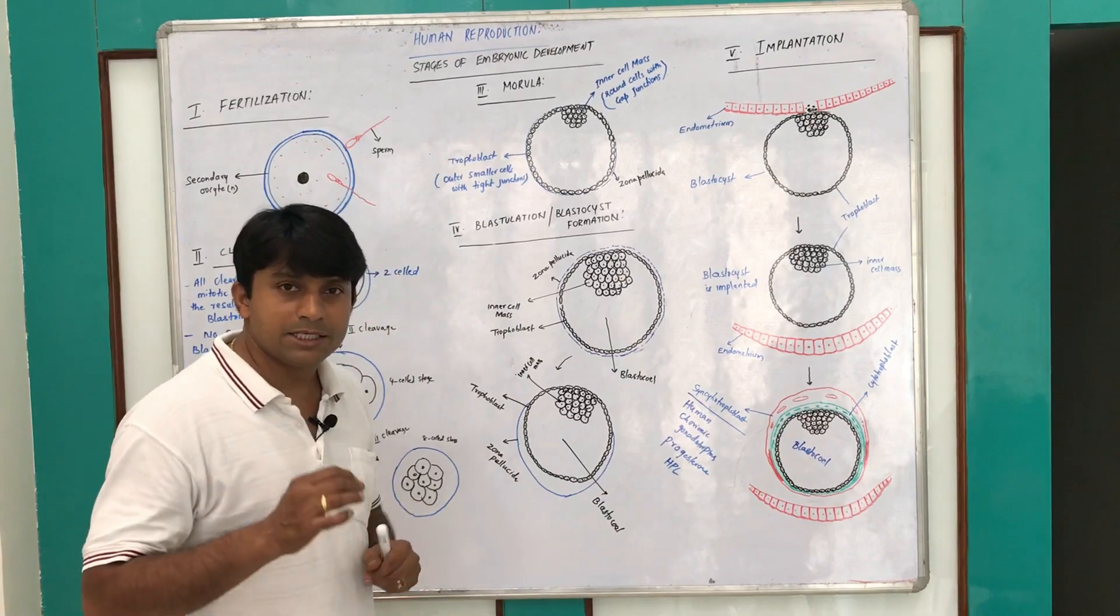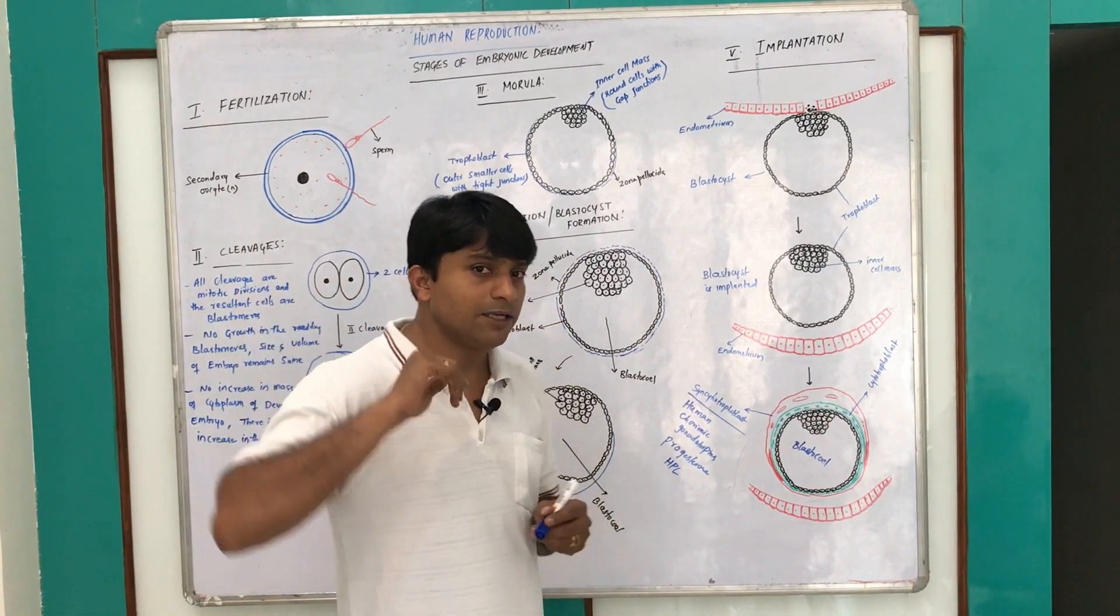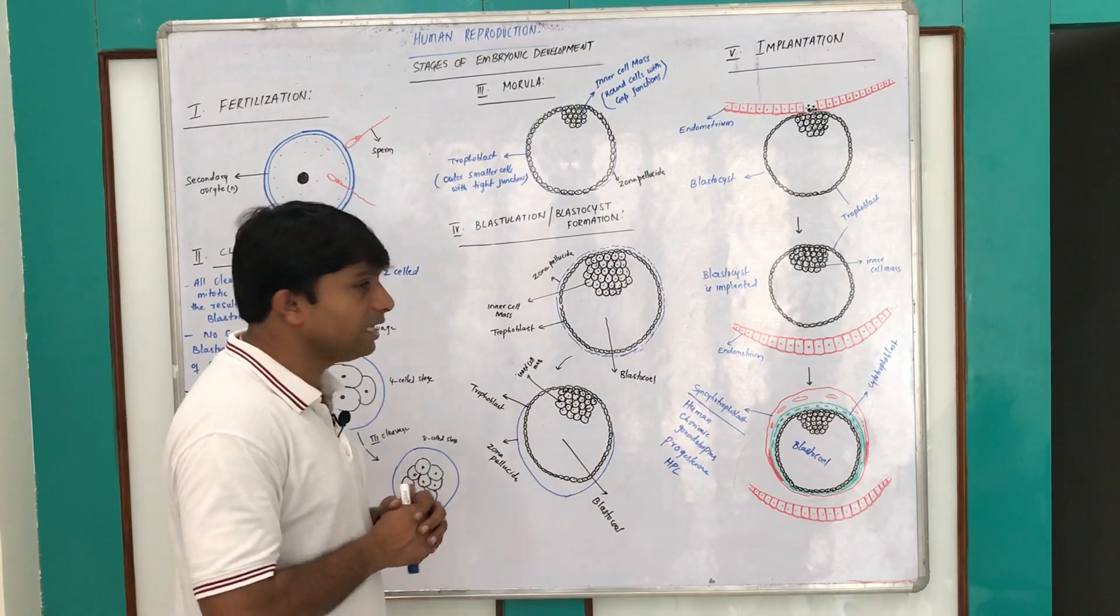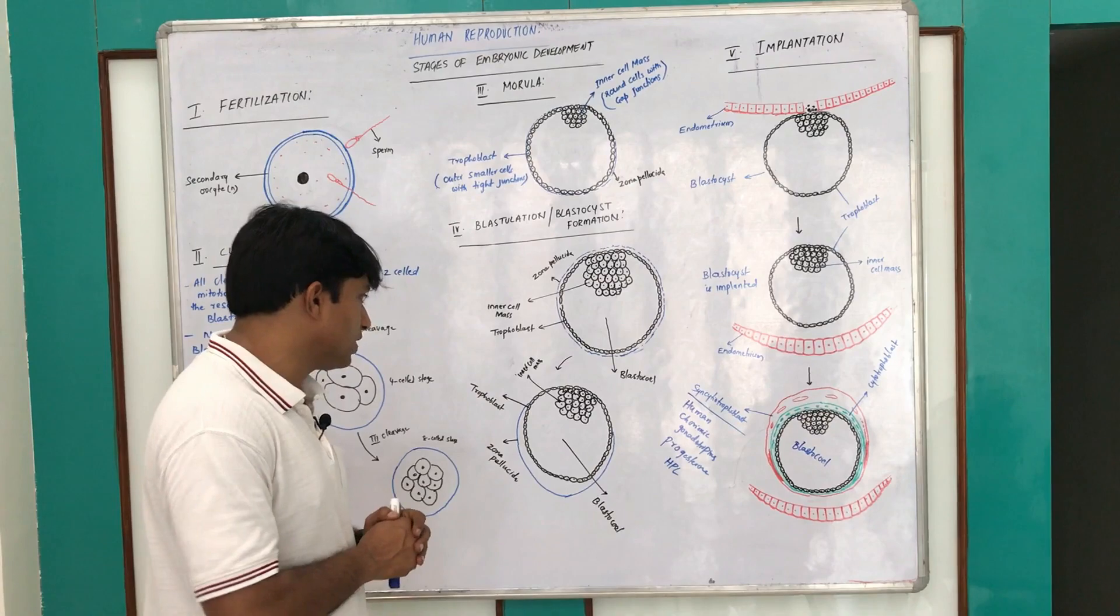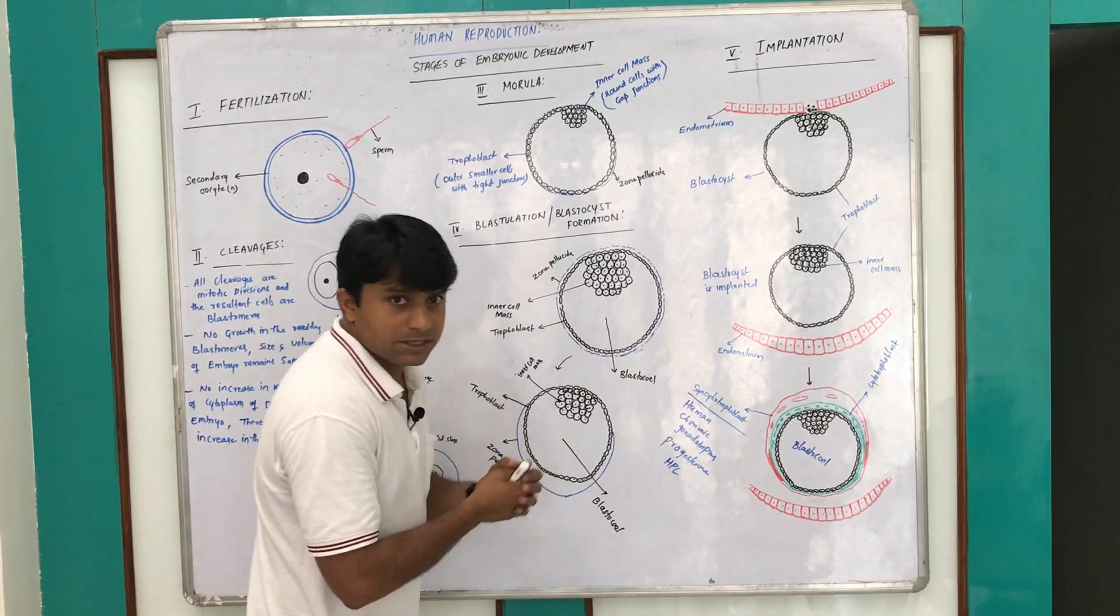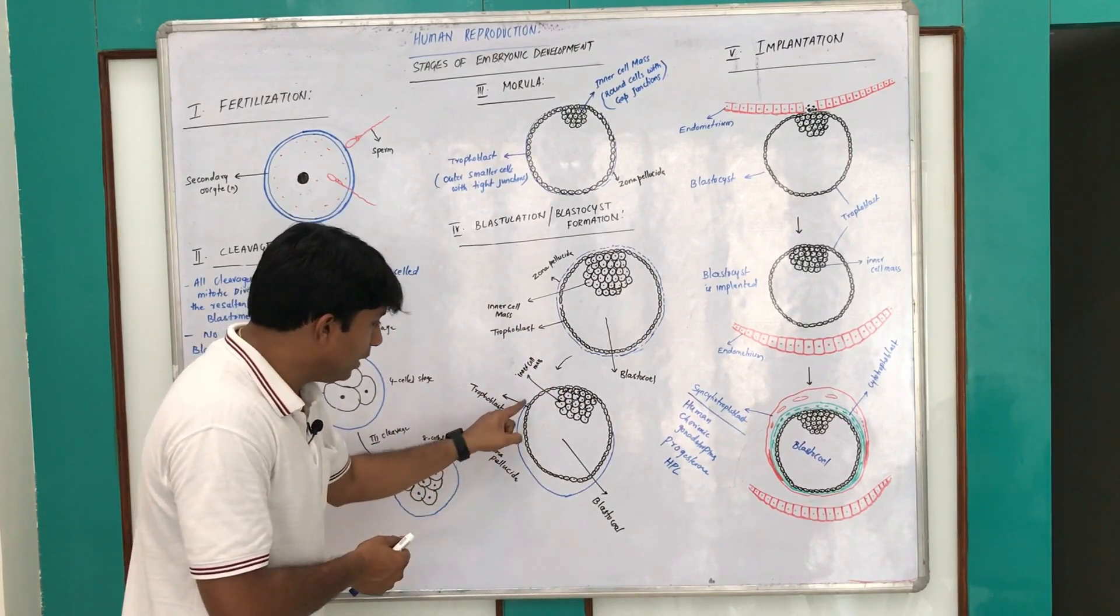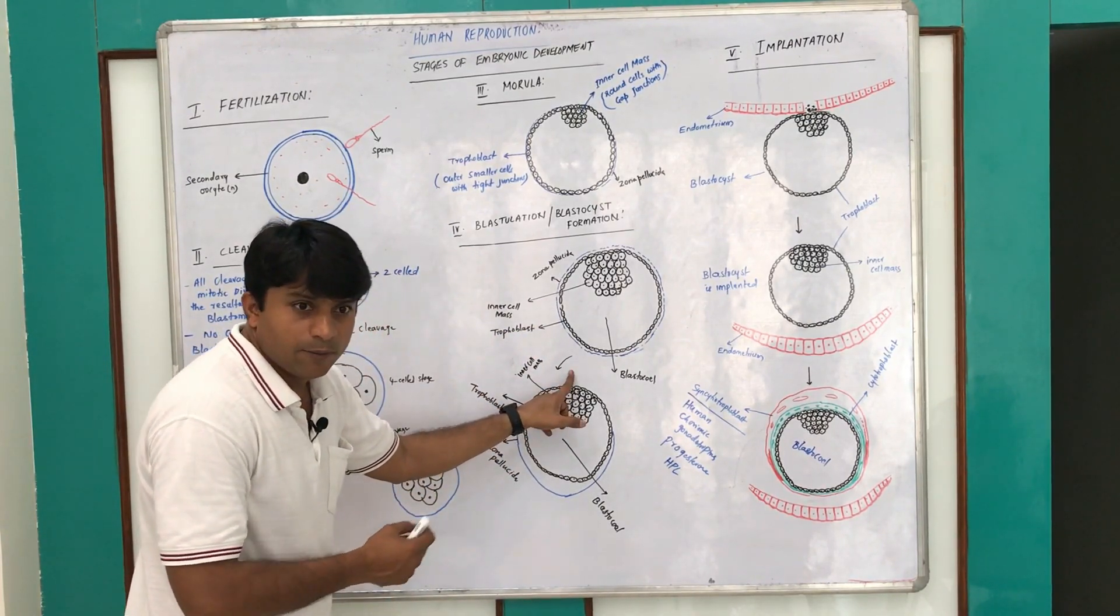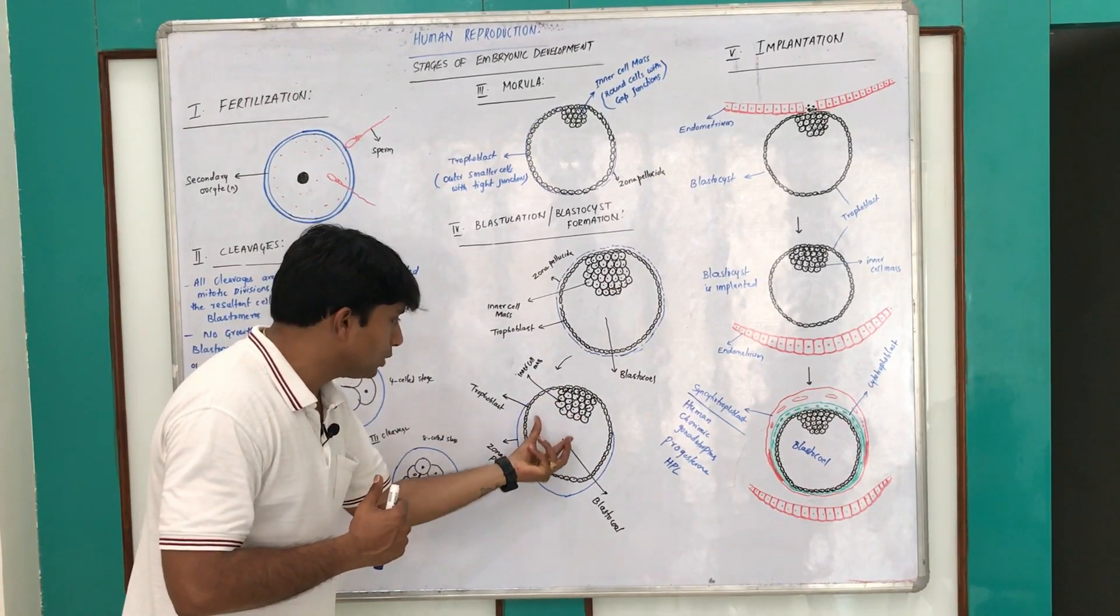This blastocyst formation is very peculiar in case of all mammals, whereas in case of other vertebrates this is called blastula, but in mammals this is called blastocyst. Now due to the increasing cell mass, it is subjected to pressure. Due to that pressure, the zona pellucida will rupture and the entire blastocyst squeezes out.